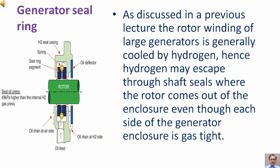As discussed in a previous lecture, the rotor winding of large generators is generally cooled by hydrogen. Hence, hydrogen may escape through shaft seals where the rotor comes out of the enclosure, even though each side of the generator enclosure is gas-tight.